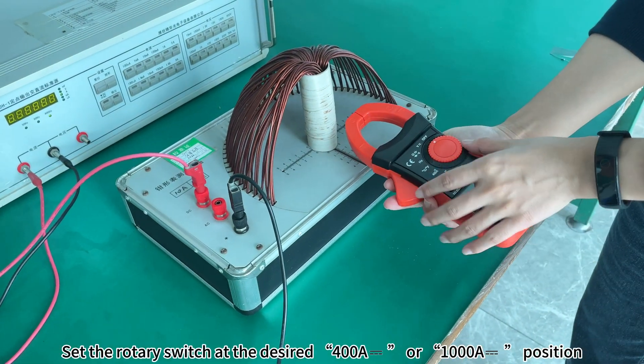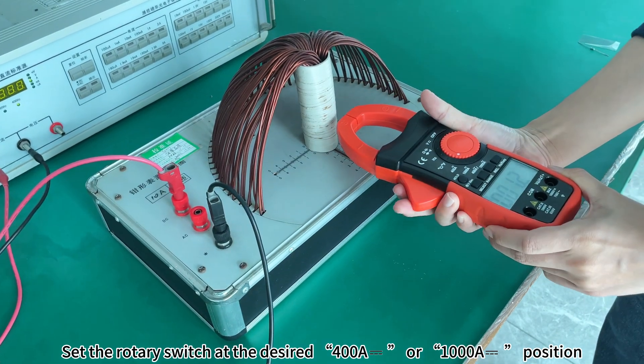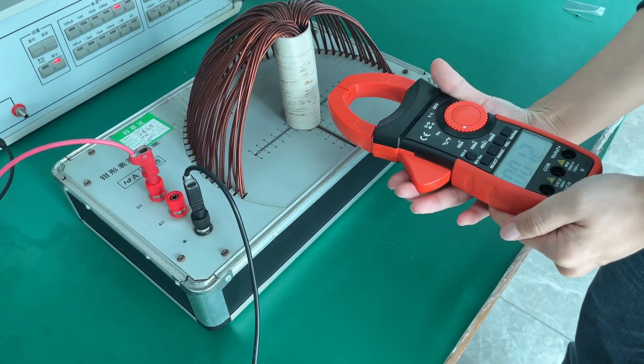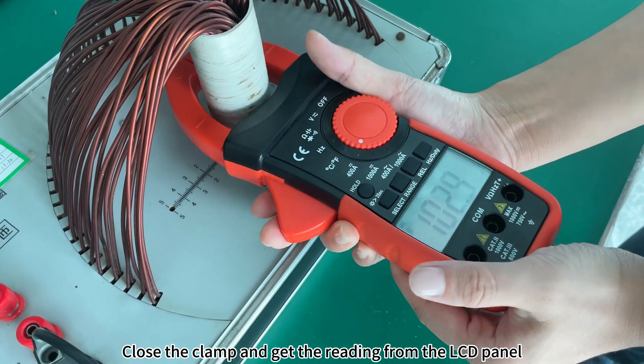Set the rotary switch at the desired 400A or 1000A position. Close the clamp and get the reading from the LCD panel.